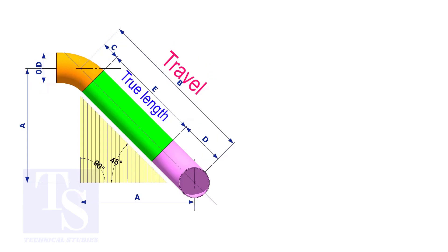Assume that the elbows are short radius. Nominal pipe size is 4 inch. The travel length is 1500 millimeters. The joint gap is 3 millimeters. Calculate the true length of the spool.